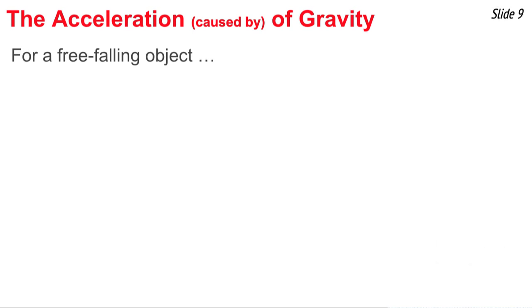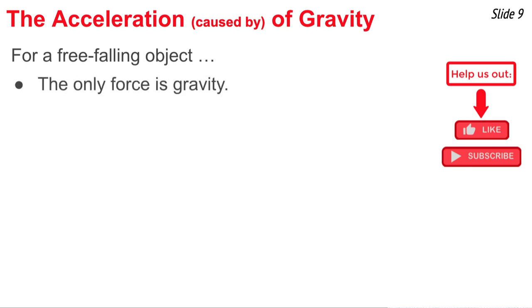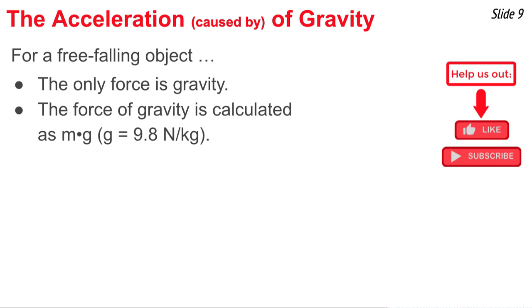So here's the line of logic that leads to the conclusion that free fall acceleration is independent of mass. For a free-falling object, the only force is gravity. And the value of that force is calculated by going mass times G, where G is 9.8 newtons per kilogram. This is the net force, M times G.